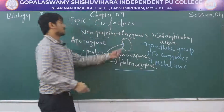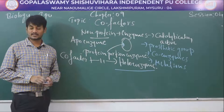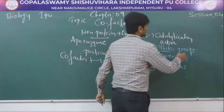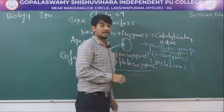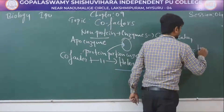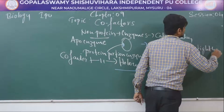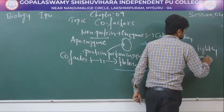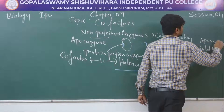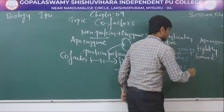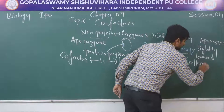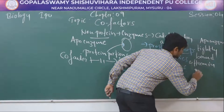The first type of cofactor is the prosthetic group. Prosthetic groups are the organic groups which are tightly bound to the apoenzyme. For example, heme in peroxidase.